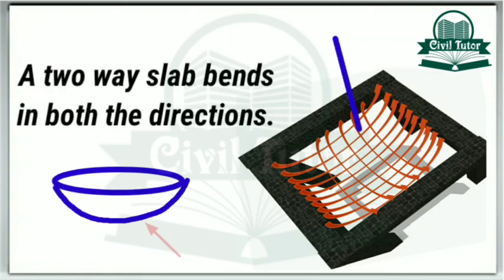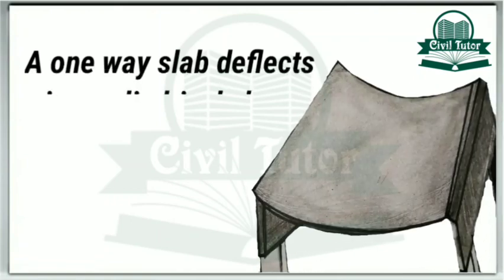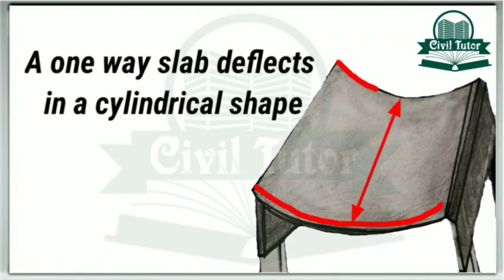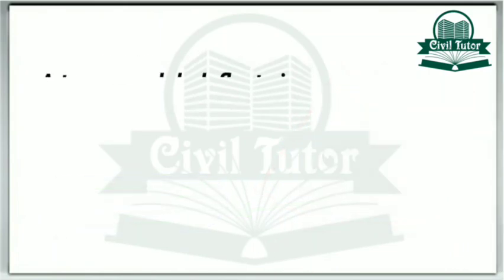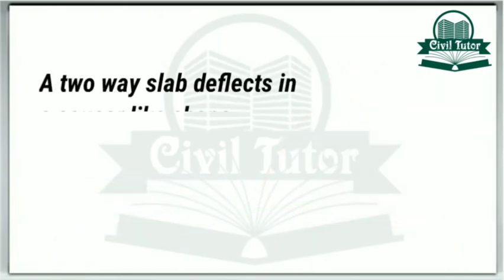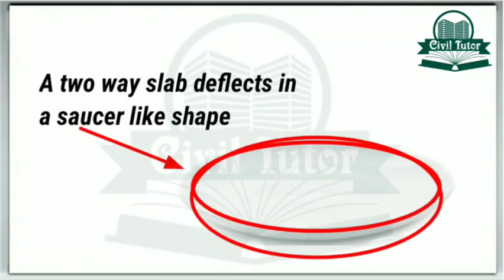As shown in this figure, a one-way slab deflects in a cylindrical shape, that is, the deflected shape is similar to the shape of a cylinder. Whereas a two-way slab deflects in such a manner that the deflected shape matches with the shape of a saucer.